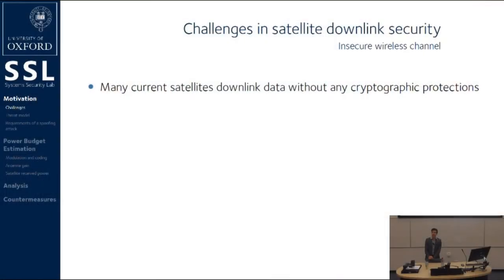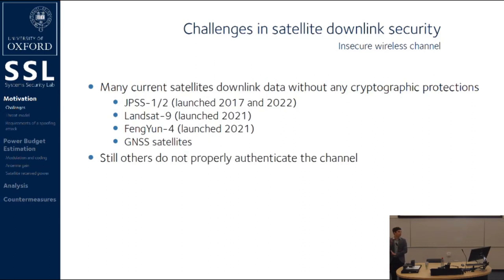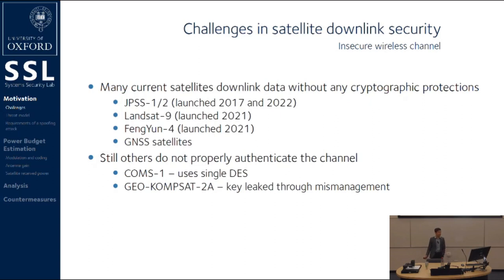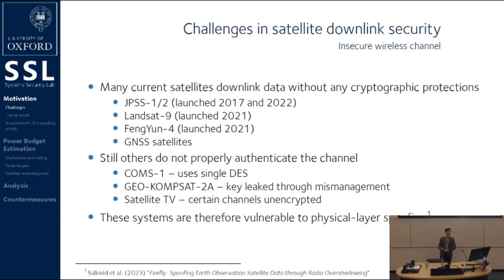Satellite data links fundamentally have a number of different challenges that all stem from the fact that these satellites are downlinking data without any cryptographic protections. And this isn't just a legacy problem. There are loads of really recent satellites that have been launched without any kind of cryptographic protections at all, and there are ubiquitous systems too, like GNSS. Furthermore, there are satellites that do use cryptography but do not properly authenticate the channel. This includes satellites such as Comms-1, which uses single DES, which is now broken, as well as GeoCompSat-2A, a Korean satellite whose key was leaked through mismanagement — the operator just put it on the website by mistake. Satellite TV as well can be encrypted, but obviously not every station. Therefore, each of these systems should be vulnerable to physical layer spoofing in the general case.